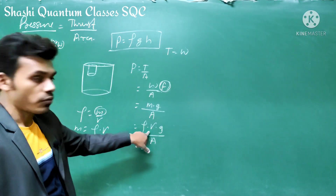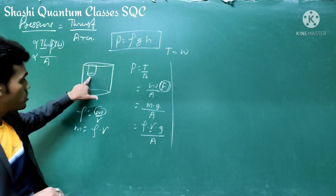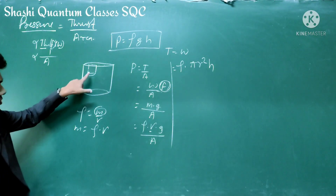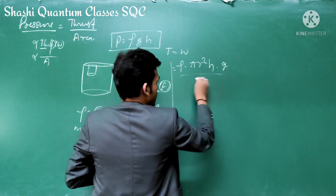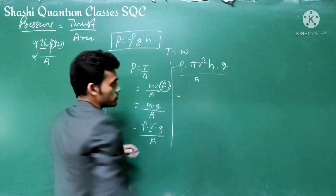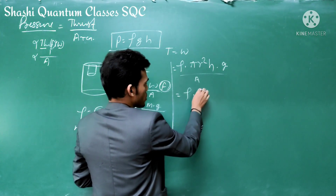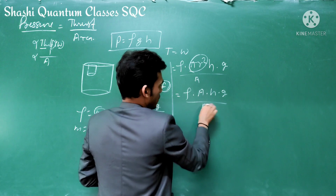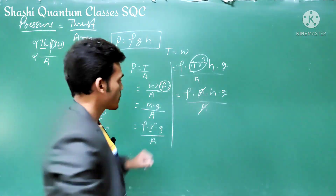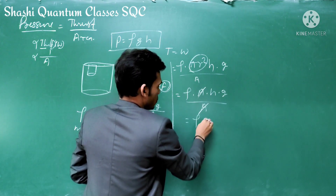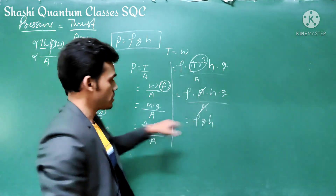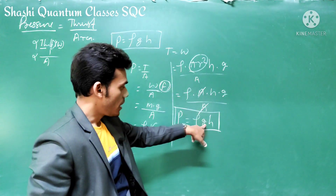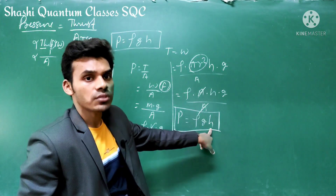For a cylinder, volume equals π r² h. So pressure equals density × π r² h × g divided by area A. Since π r² is the cross-sectional area, it cancels with A in the denominator. Finally, we get pressure equals rho × g × h, that is P = ρgh, where rho is density, g is acceleration due to gravity, and h is the height of the liquid column.